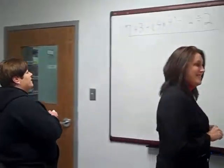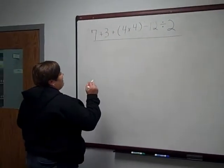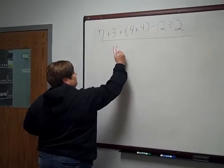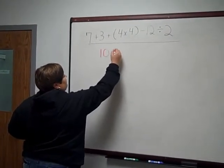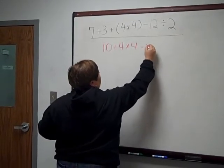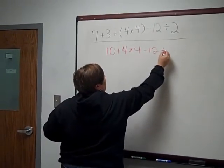Okay, thank you. Okay, class. We have 7 plus 3 is 10 plus 4 times 4 minus 12 divided by 2.